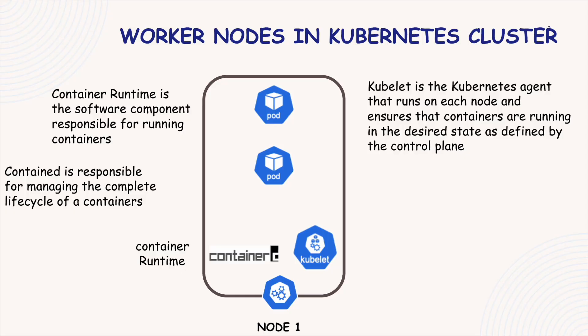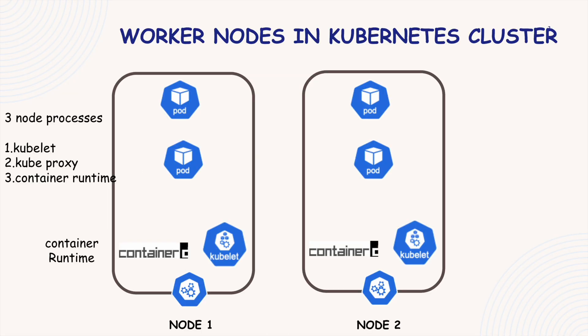Let's understand how communication happens between different parts of a Kubernetes cluster. In Kubernetes, communication between different components like an application pod and a database is handled using a concept called services. A service acts like a load balancer — it catches any request meant for a specific application or pod and forwards the request to the appropriate pod.